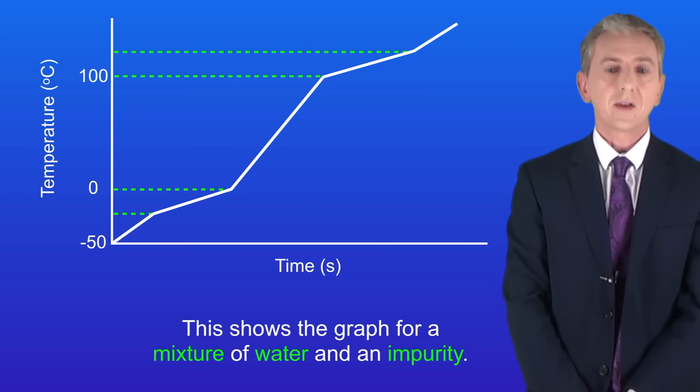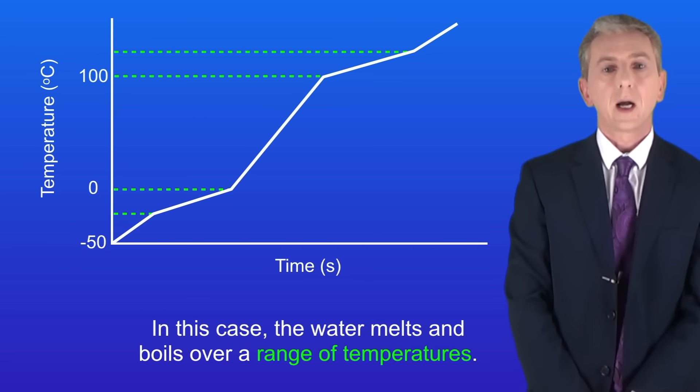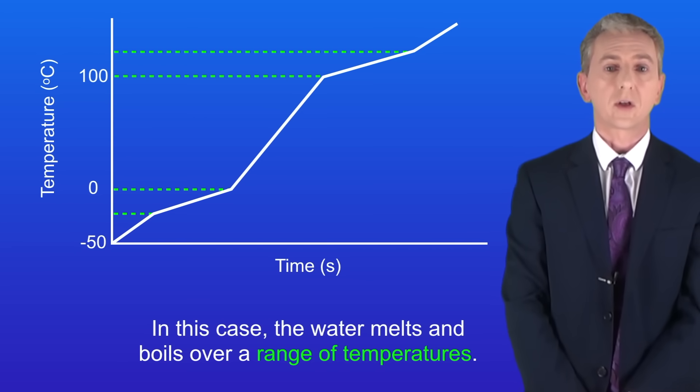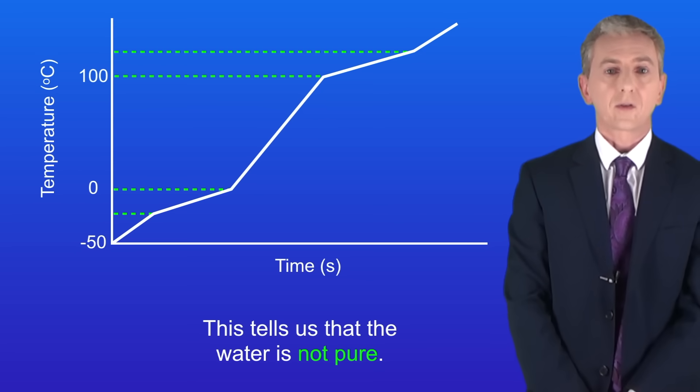I'm showing you here the same graph but this time for a mixture of water and an impurity. As you can see in this case the water melts and boils over a range of temperatures. This tells us that the water is not pure and we get a similar shape graph for any impure substance.